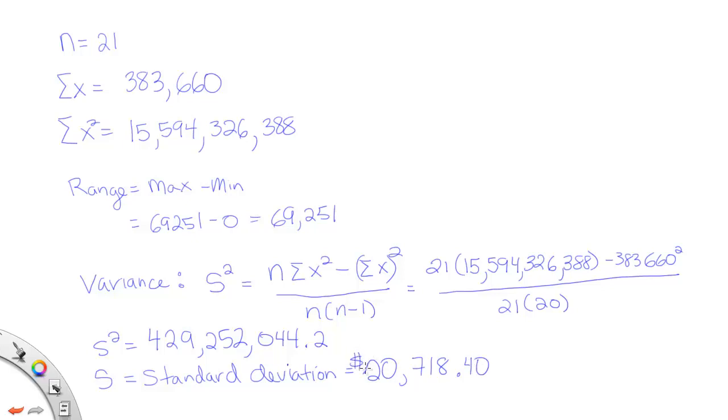So 20,718.40. And remember, that's in the unit of dollars, right? So 20,718.40. Don't forget your range is also measured in dollars. Your variance, unfortunately, is in dollars squared, which again is a nonsense unit, so I'm not going to write it in. But we have that, and we have the standard deviation, and those are the three things they asked us for in the problem.